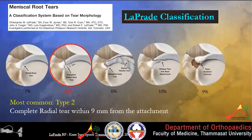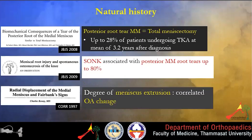LaPrade proposed a classification dividing meniscus root tears into five types. The most common is Type 2, which is a complete radial tear within 9 mm from the attachment. Regarding natural history, a study by LaPrade et al. showed that in patients with posterior root tear, up to 28% ended up requiring total knee replacement at a mean of 3.2 years after initial diagnosis. Subchondral insufficiency fracture of the knee is associated with root tear in up to 80% of cases.